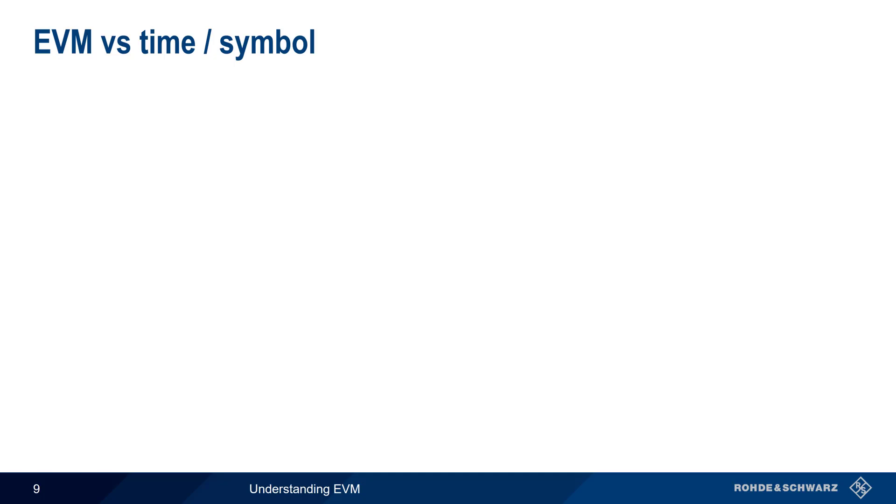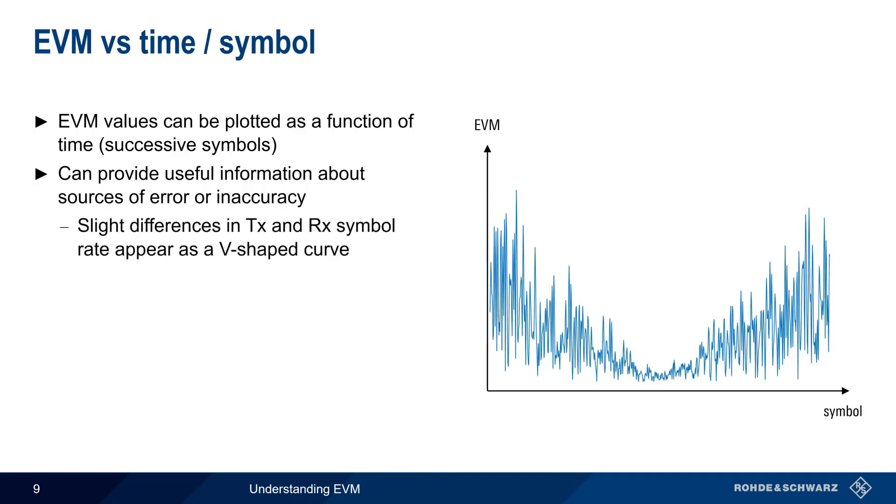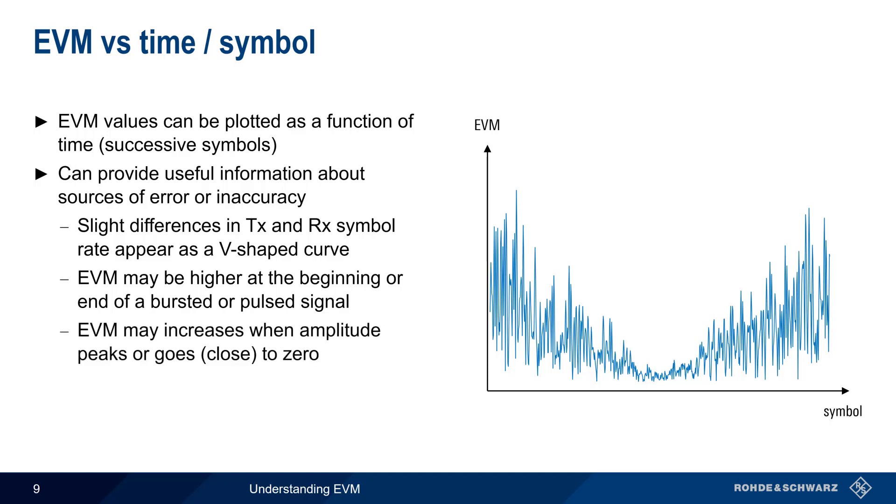Since EVM is computed on a per-symbol basis, we can plot EVM values as a function of time, that is, the EVM of successive symbols. Looking at EVM as a function of time can provide very useful information about any sources of error or inaccuracy in the received signal. For example, slight differences between the transmit and receive symbol rate will appear as a V or bathtub-shaped curve. EVM may also be higher at the beginning or end of a bursted or pulse signal, due to various amplifier effects or timing. And if amplitude changes over time, this may increase the EVM of symbols with relatively high or relatively low amplitudes.